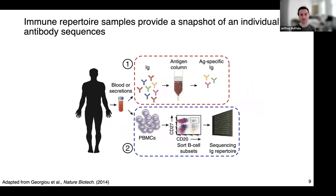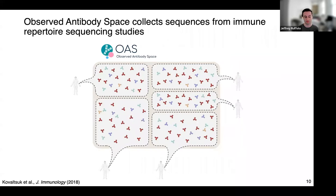To do this, we want to call on as much data as we can find. Although there are only a few thousand antibody structures solved experimentally, there's a vast set of antibody sequences collected through immune repertoire sequencing studies. In those studies, you can identify antigen-specific antibodies or sequence the entire repertoire. For the last couple of decades, researchers and companies around the world have been collecting these datasets, aggregated into the Observed Antibody Space by Charlotte Dean's lab at Oxford. This dataset contains about a billion unpaired antibodies and 100,000 paired antibodies, which we use for training our representation learning model.